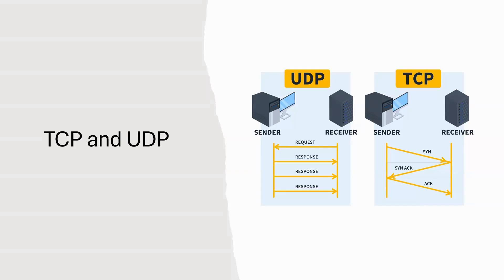On the other hand, UDP is used for things like video streaming or online gaming, where speed is more important than reliability. If a packet or two gets lost, it's no big deal.